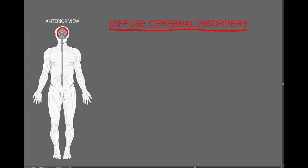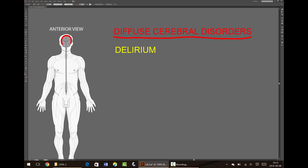Diffuse dysfunction of the cerebrum, and particularly the cerebral cortex, may cause abnormalities of the higher nervous system functions, with or without also involving the lower neural functions. For example, a common syndrome of diffuse cerebral cortical dysfunction called delirium, also called encephalopathy, which basically just means brain dysfunction, usually involves confusion with abnormal arousal, attention, orientation, or other higher neural functions, while often sparing the basic motor, sensory, and autonomic functions.